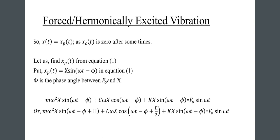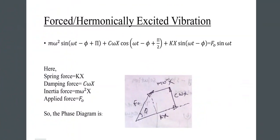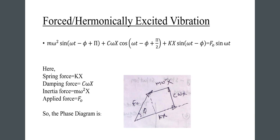Substituting, we get: minus m·omega-squared·X·sine(omega·t minus phi) plus c·omega·X·cos(omega·t minus phi) plus k·X·sine(omega·t minus phi) equals f-naught·sine(omega·t). Equivalently, m·omega-squared·X·sine(omega·t minus phi plus pi) plus c·omega·X·cos(omega·t minus phi plus pi/2) plus k·X·sine(omega·t minus phi) equals f-naught·sine(omega·t).